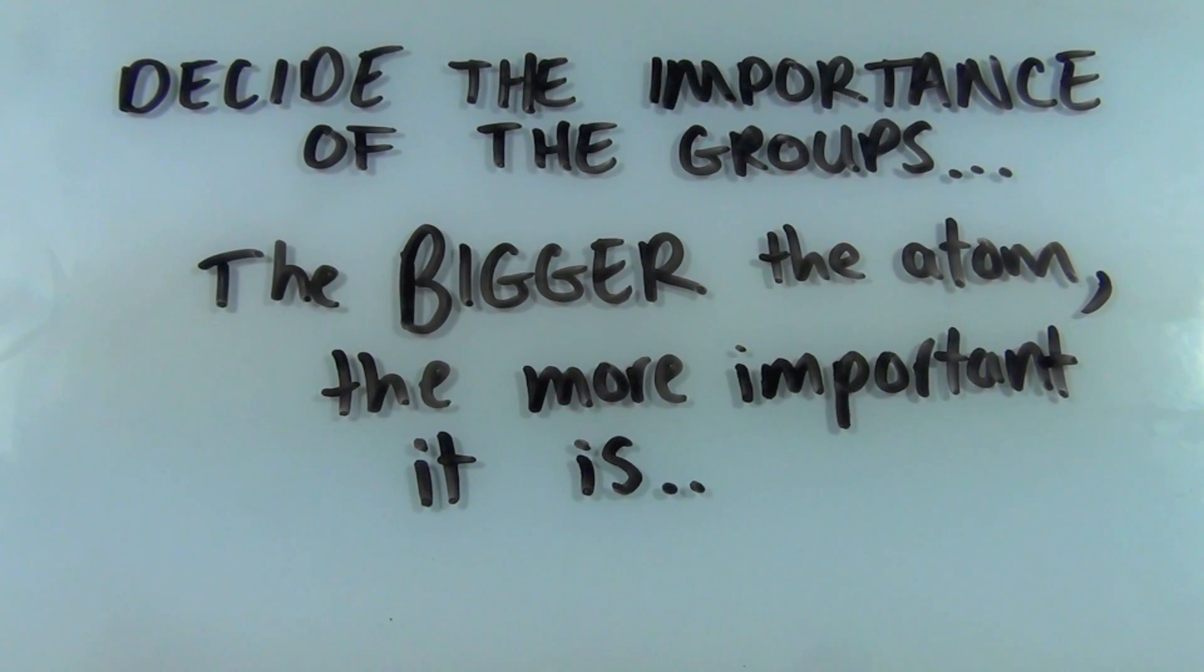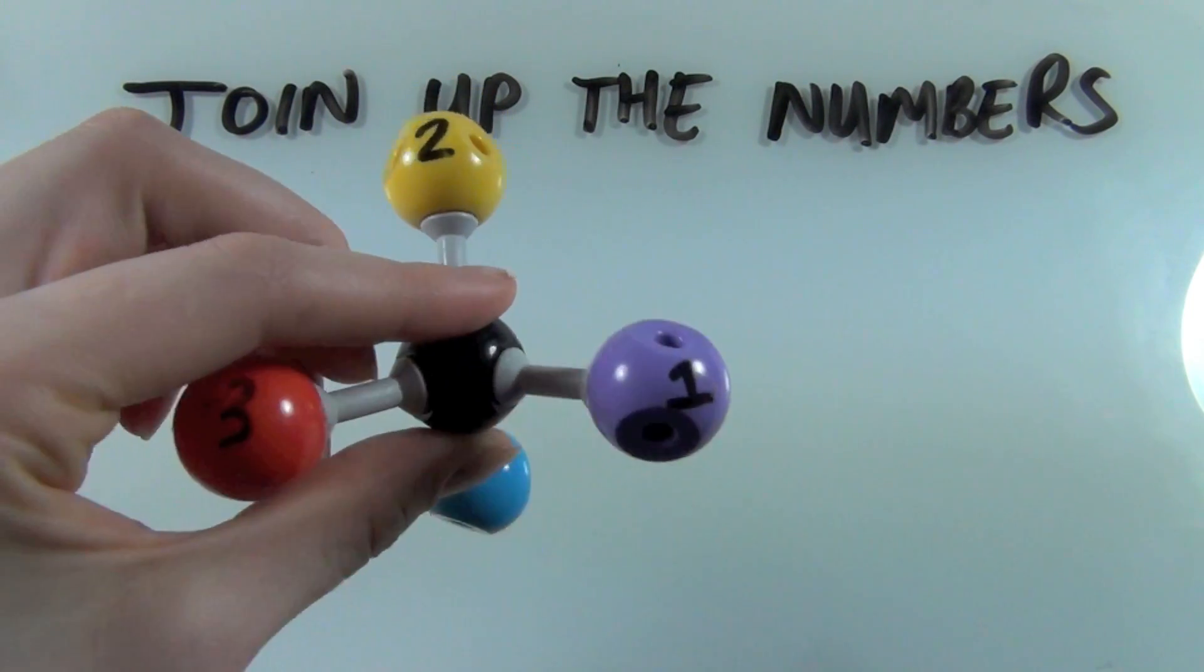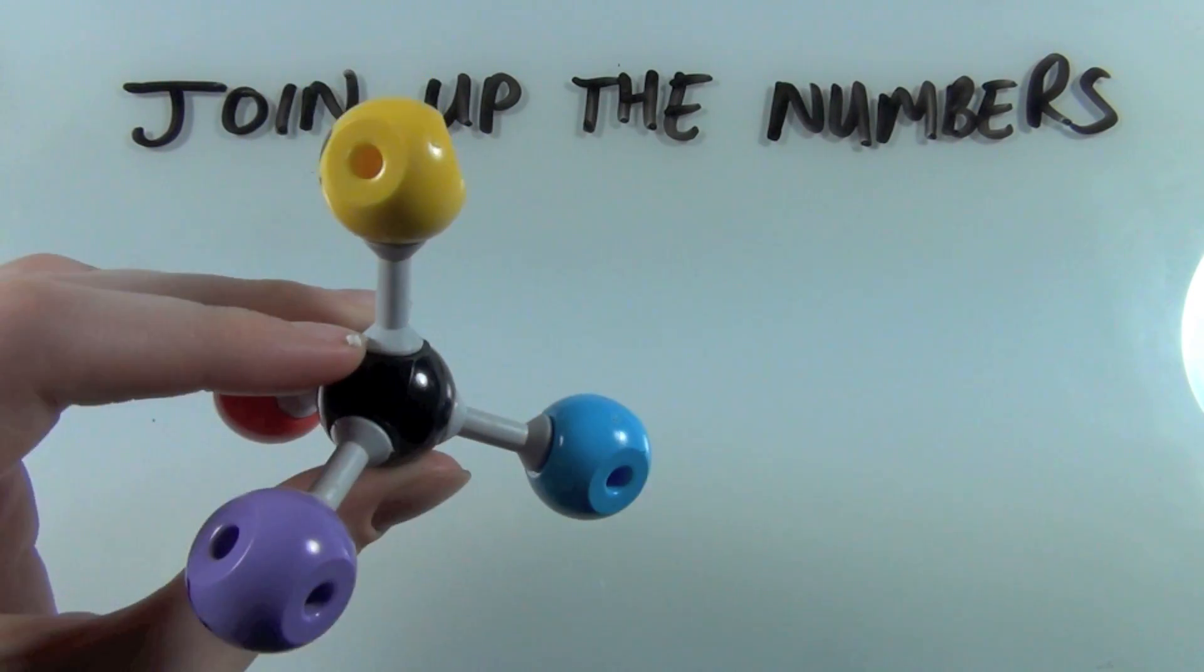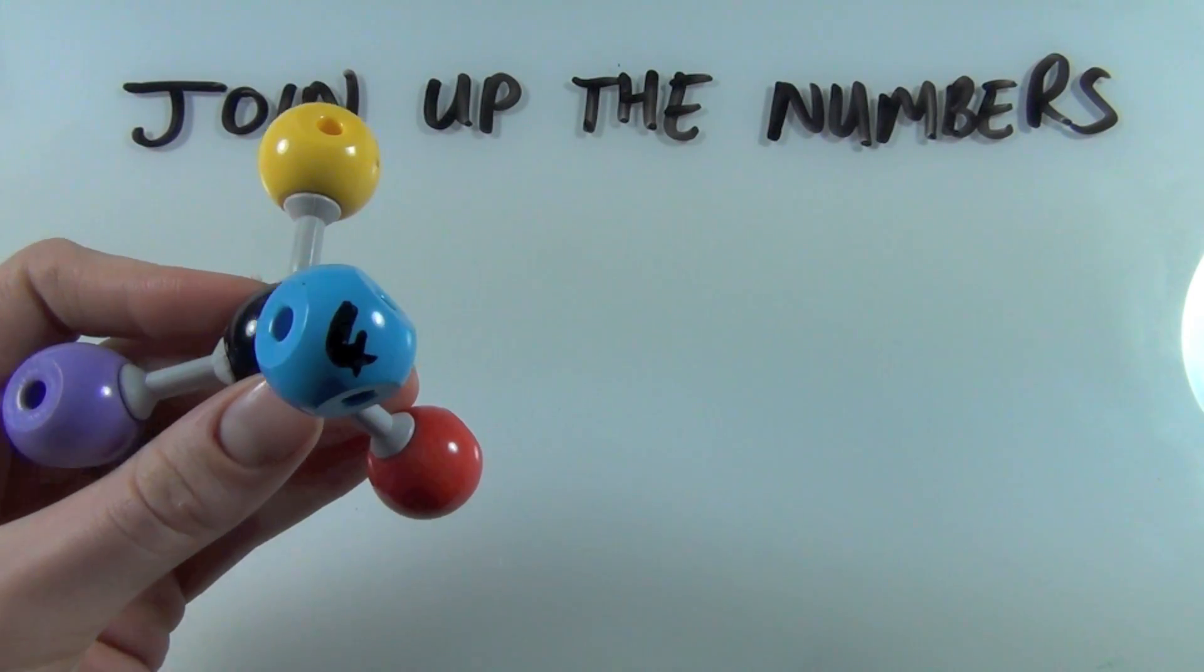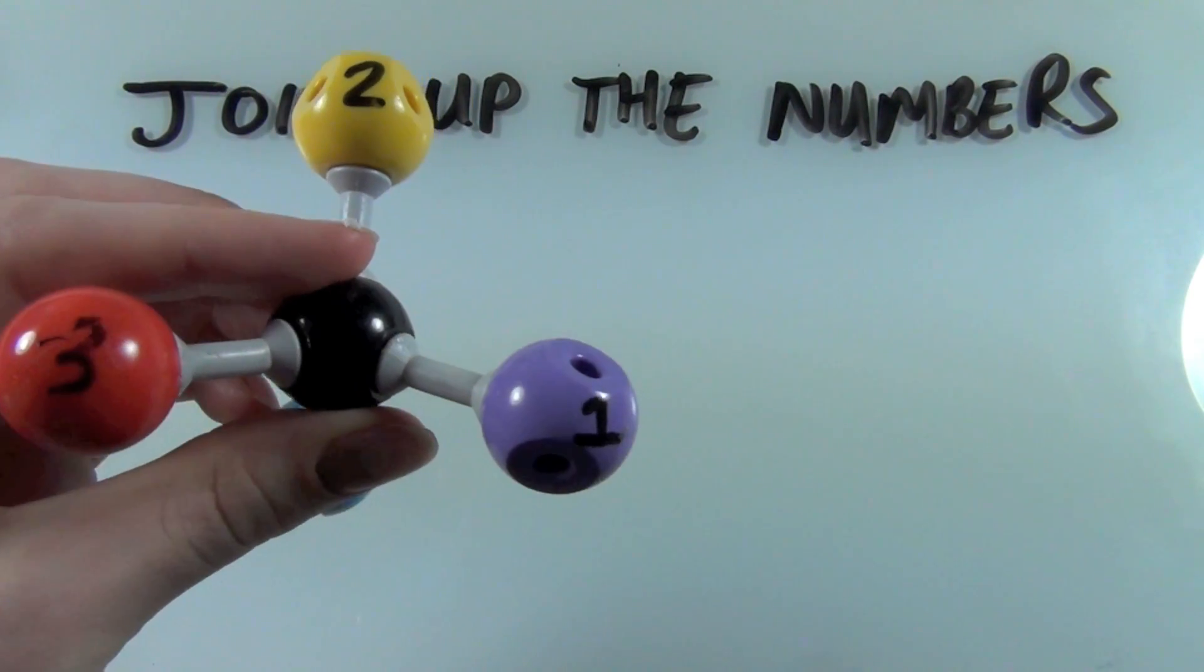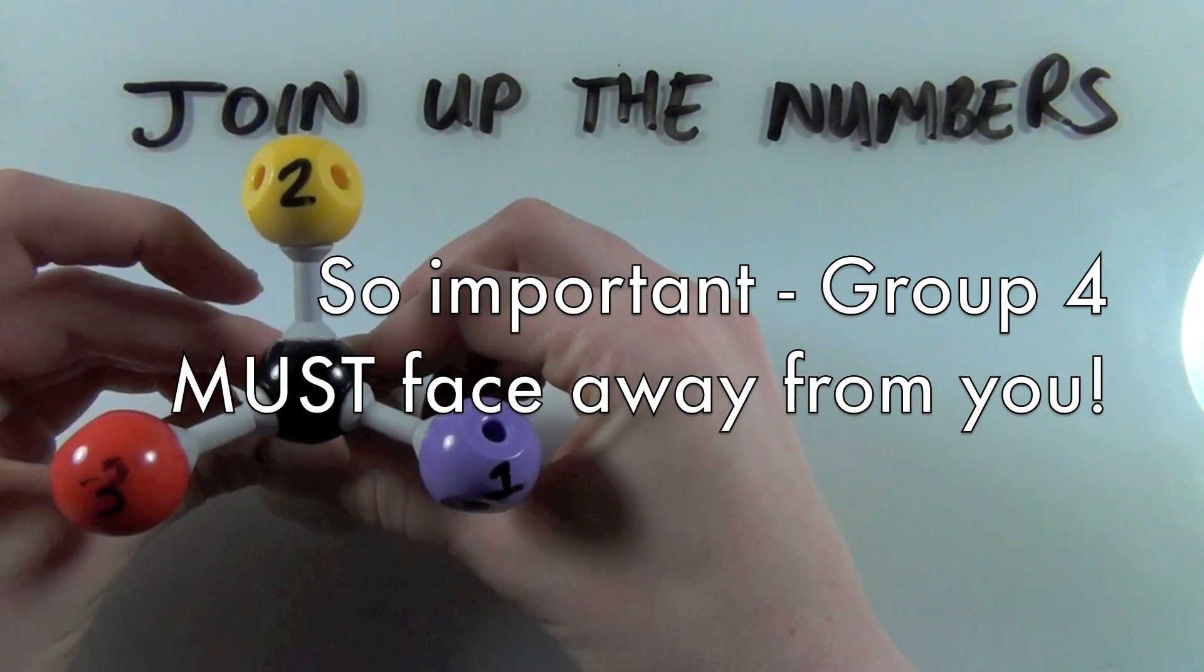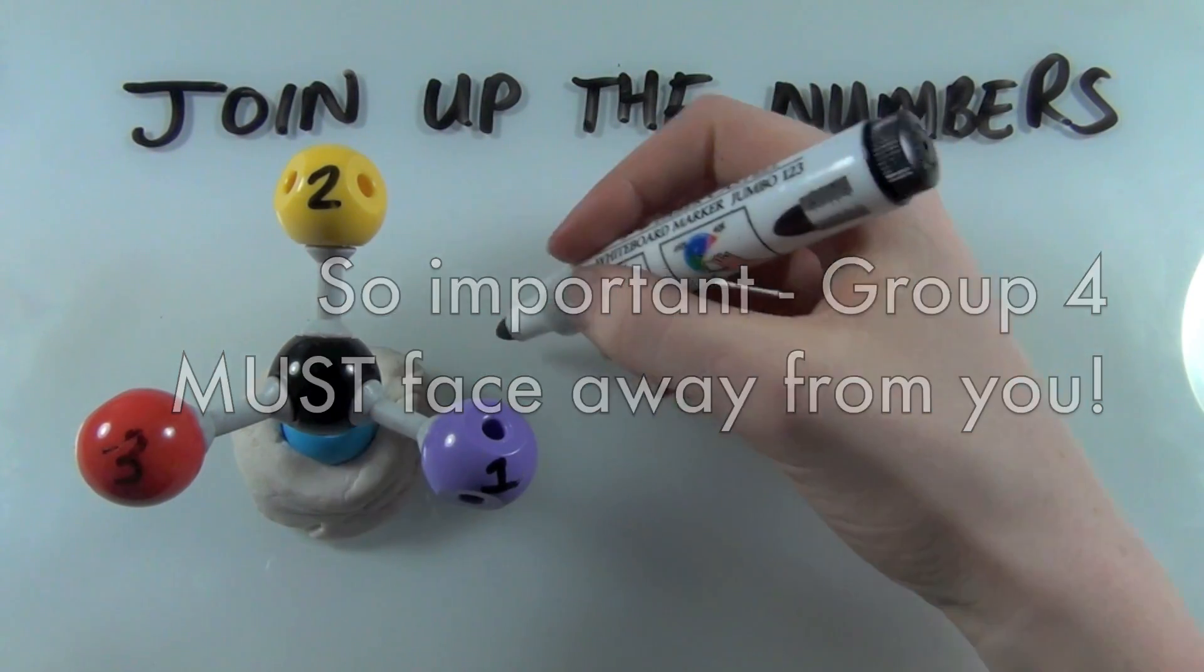So hydrogen, being the smallest atom, is always going to be the least important group, if it's one of your groups. So what I've done here is I've arbitrarily assigned importance, with one being the most important and four being the least important. And what we're going to do is we're going to put the least important group facing away from us. And that's the view we're going to look at the molecule from. You always put the least important group facing away from you.